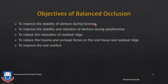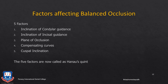The objectives of balanced occlusion are: first, the primary objective is to improve the stability of the denture during function — mastication, chewing, gnawing, etc.; second, to improve the stability and retention of the denture during parafunctional movements; third, to reduce resorption of residual ridges by limiting forces on them; fourth, to reduce trauma from occlusal forces on the oral tissues — the mucosa and residual ridges; and fifth, to improve the comfort for the patient by ensuring all the above objectives are met.